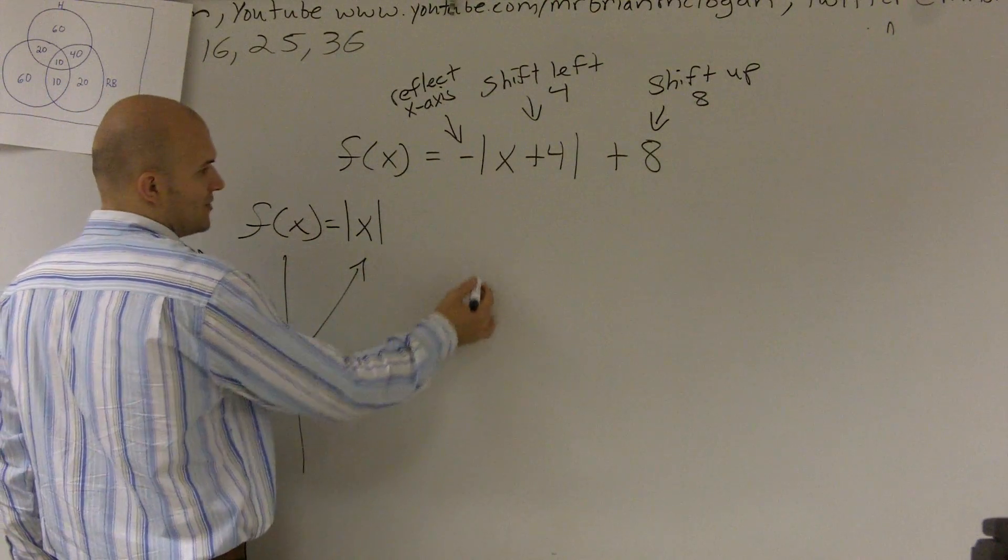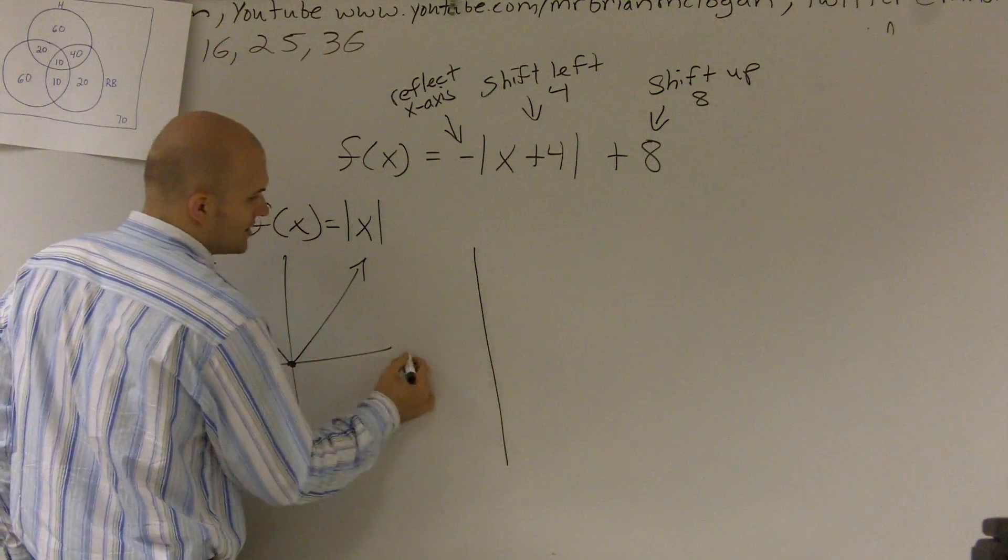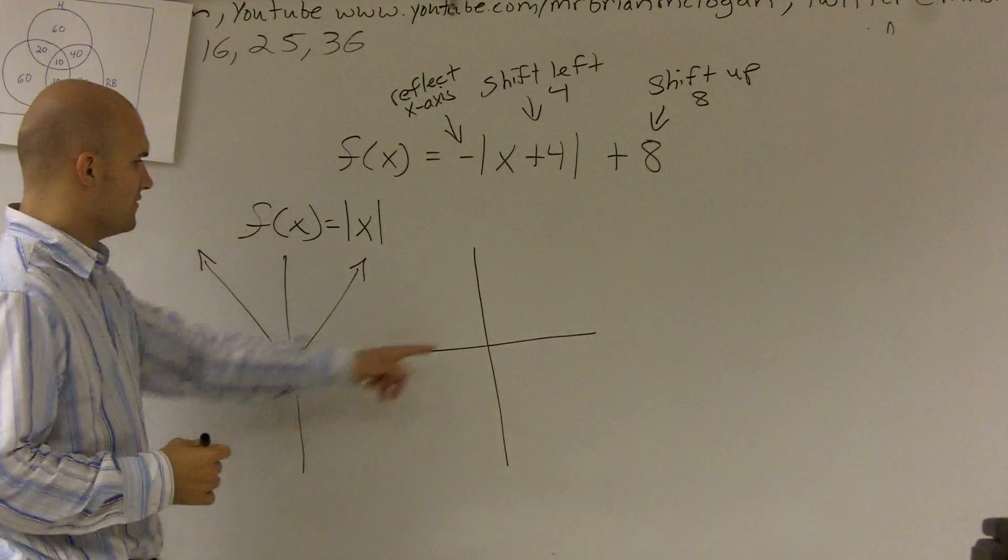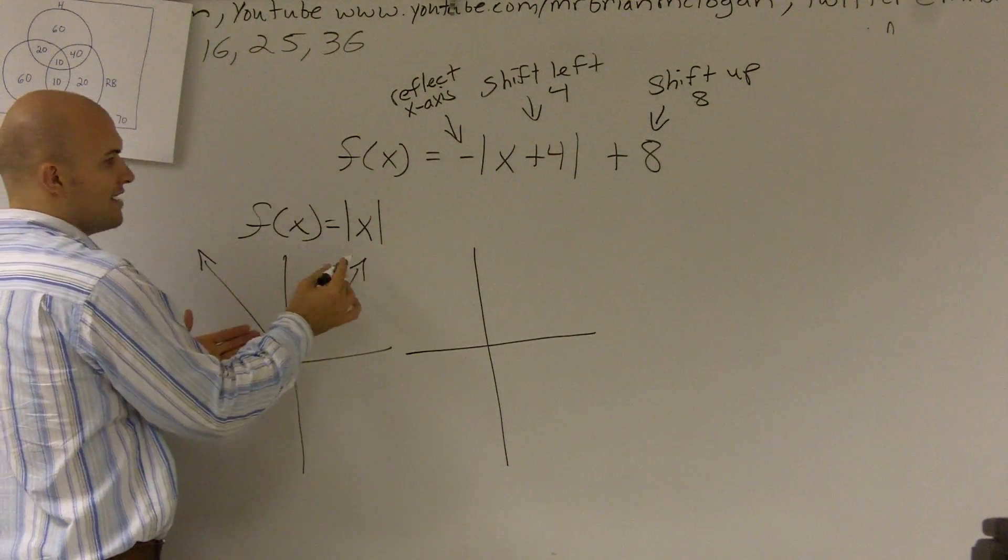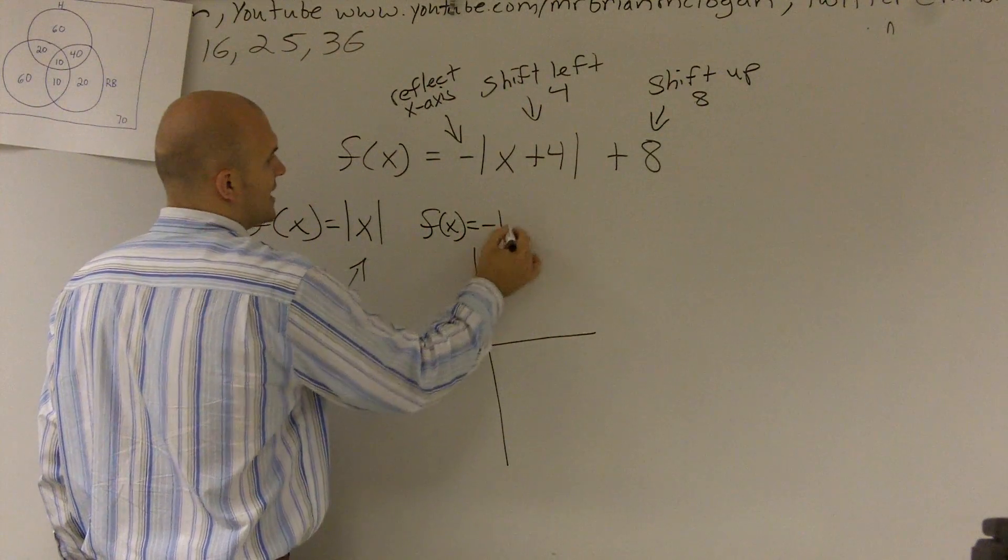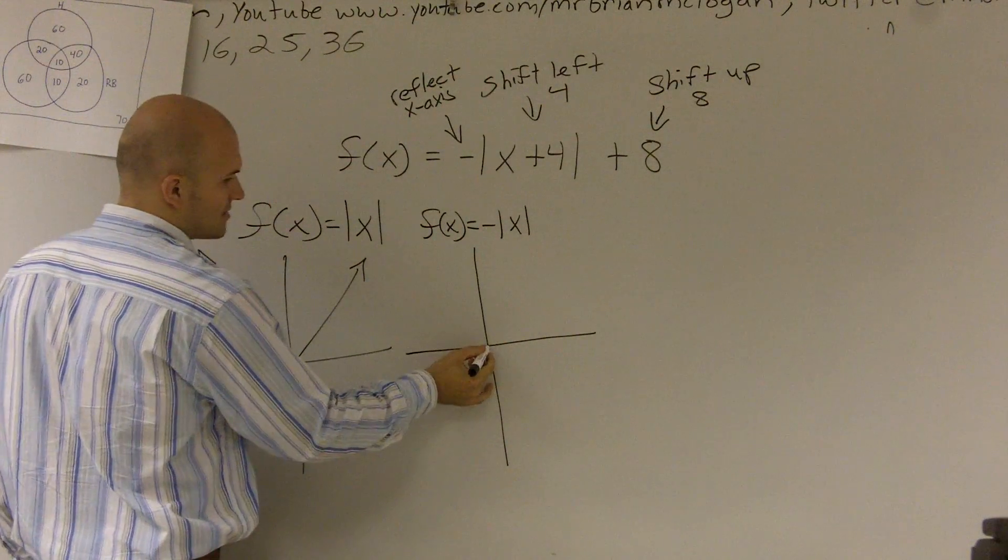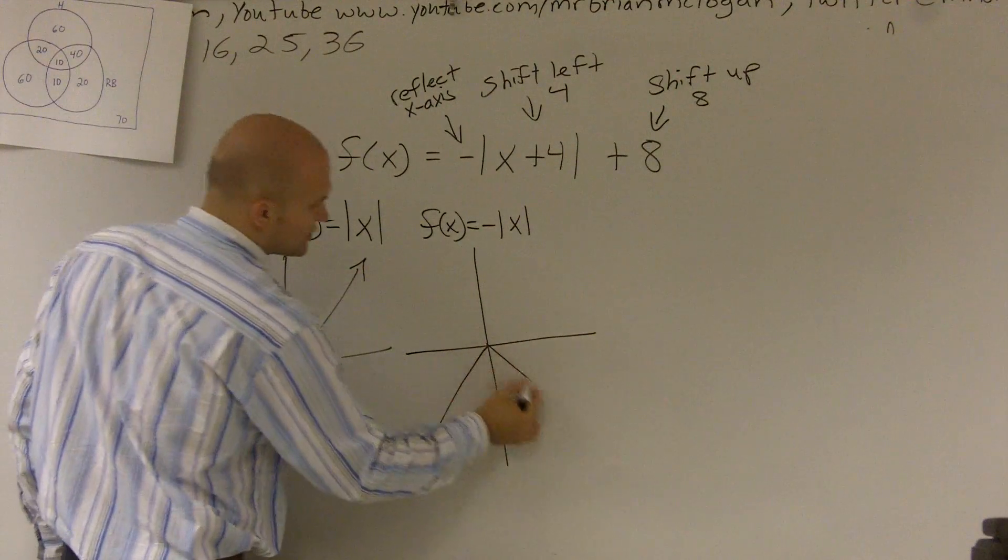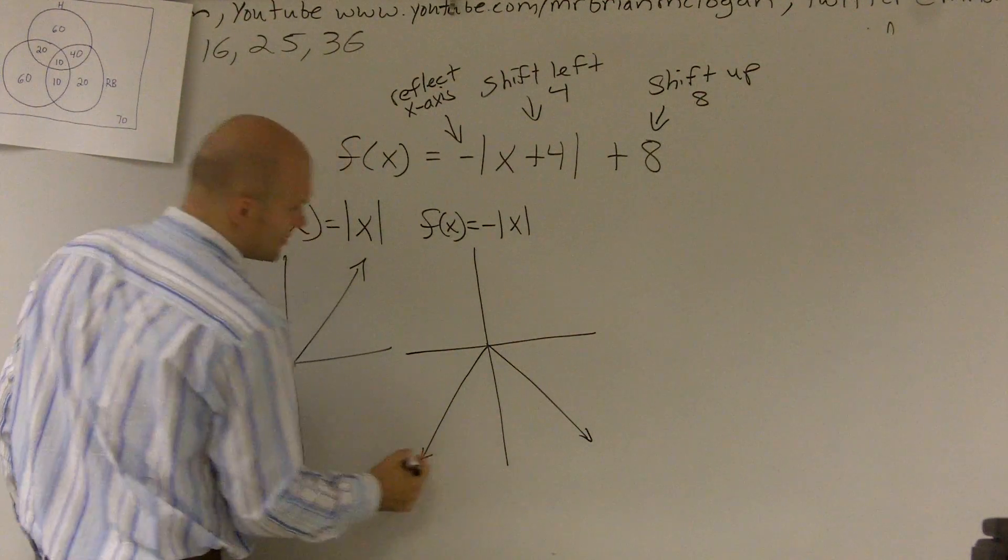So let's look at each one of these transformations individually. And then we'll put them together as a graph. First thing, if I was just to reflect this graph, if I was just to do f of x equals negative absolute value of x, all I would do is I would change my y coordinates so they are now all negative.